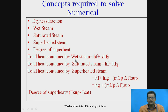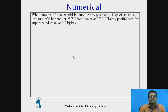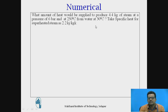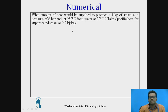Numerical 1: What amount of heat would be supplied to produce 4.4 kg of steam at a pressure of 6 bar and 250°C, from water initially at 30°C? The specific heat for superheated steam is given as 2.2 kJ/kg·K.